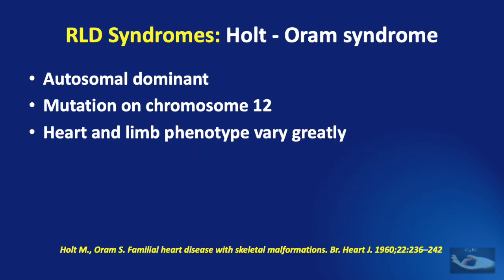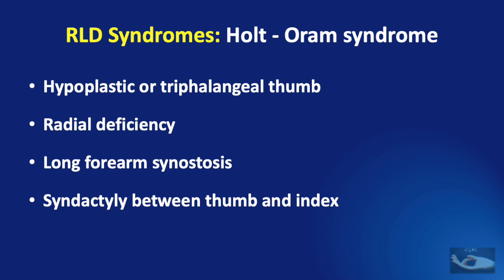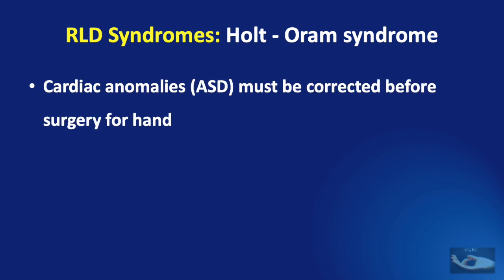Holt-Oram syndrome is inherited as an autosomal dominant trait due to a mutation on chromosome 12. It involves mainly the heart and limb, and phenotypes may vary greatly — affected families benefit from genetic counselling. It can include a hypoplastic or triphalangeal thumb, radial deficiency causing radial club hand, long forearm synostosis, and syndactyly between the thumb and index fingers. The main cardiac anomaly is atrial septal defect, which must be corrected before surgery for the radial club hand.